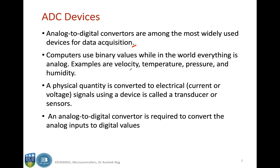For example, temperature, pressure, humidity, velocity, etc. Most of the IoT sensors sense some of these physical quantities and the corresponding electrical signal that represents these quantities is analog in nature.